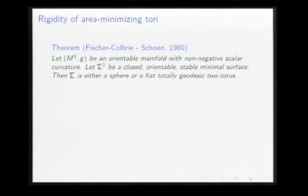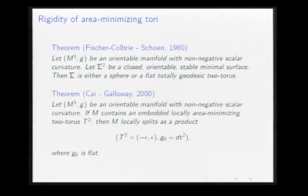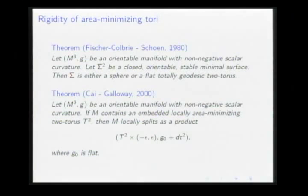Looking at the torus case, it was conjectured that a hypothesis stronger than stability would imply strong restrictions on the geometry of M. This was proved by Cai and Galloway. Assume M is an orientable manifold with non-negative scalar curvature, and suppose it contains an embedded locally area-minimizing torus — meaning every nearby surface must have greater area. Then there is a neighborhood of this torus isometric to a product, where the slice is a flat torus.